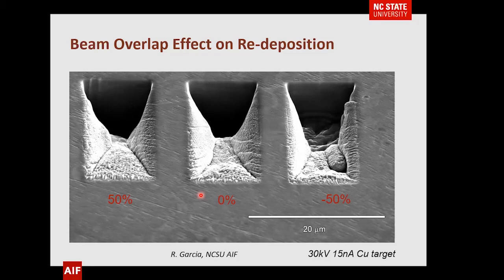Q&A: Can FIB be adapted to work with other than gallium source? Yes. People have used a number of sources — indium is frequently an option. What has come about more recently are the new gas sources: plasma FIBs, where instead of maybe 30 nanoamp beams, they're up to 2 or 3 microamps with a sputtering rate more than 100 times faster. People also do ion implantation using a multi-element source with a mass spectrometer to filter and implant — for example, silicon into a material — making discrete devices that are radiation-hardened. But most of what you're going to see commercially are gallium sources. Gold and bismuth are also used as sources, seen on instruments such as the time-of-flight mass spectrometer.